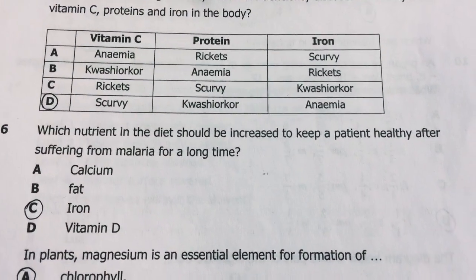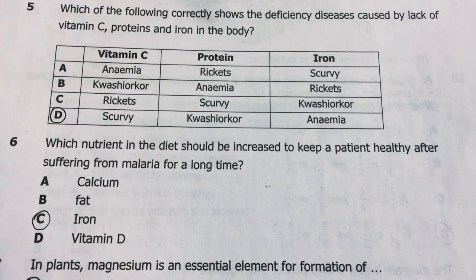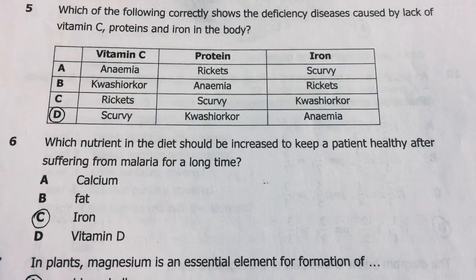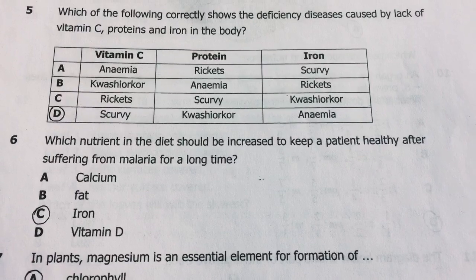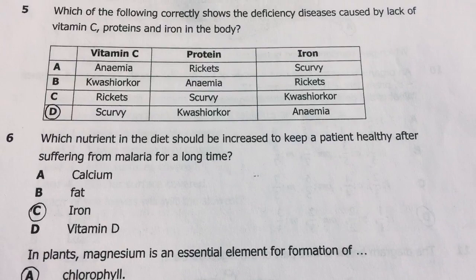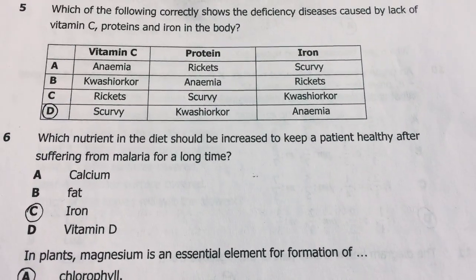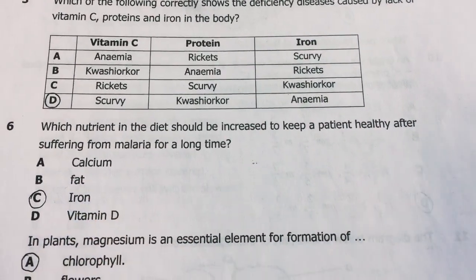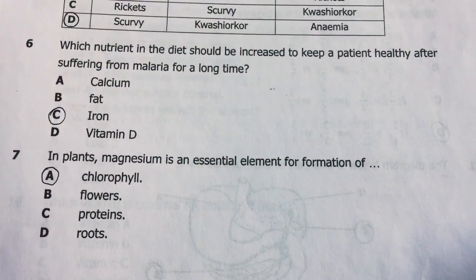Question 6: Which nutrient should be increased to keep a patient healthy after suffering from malaria for a long time? Malaria destroys red blood cells and produces toxins, so a person can become anemic. Therefore, iron should be part of their diet after suffering from malaria for a long time. The answer is C.